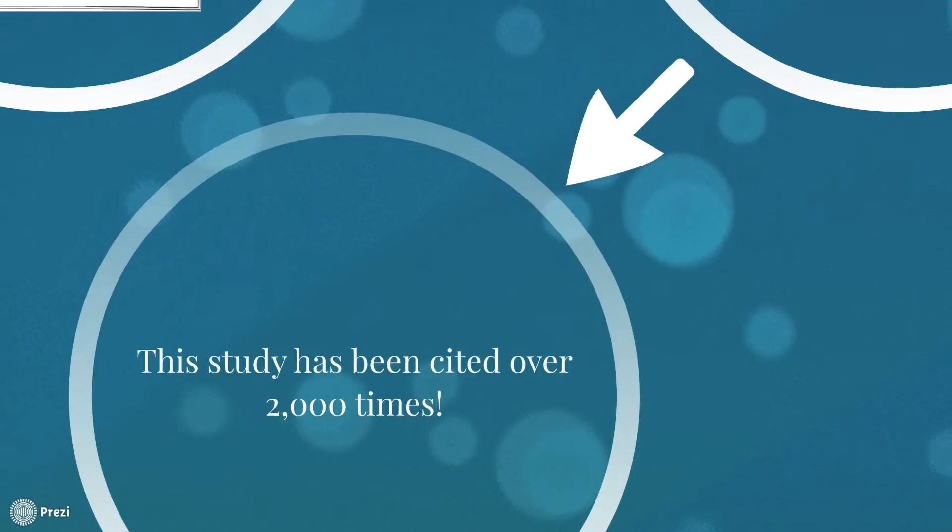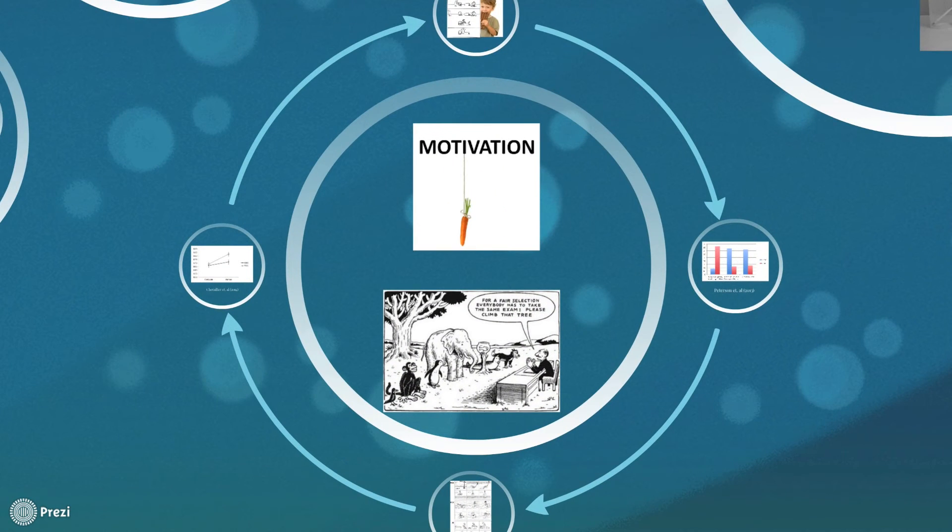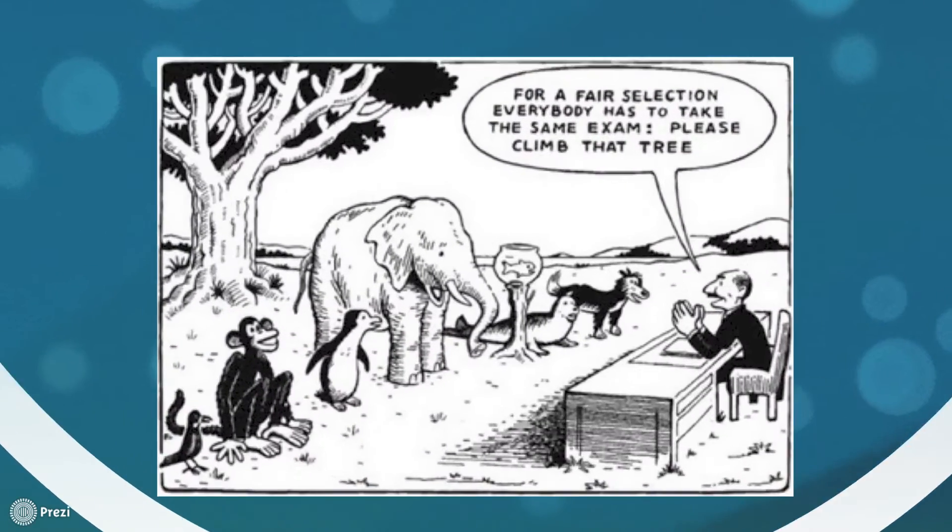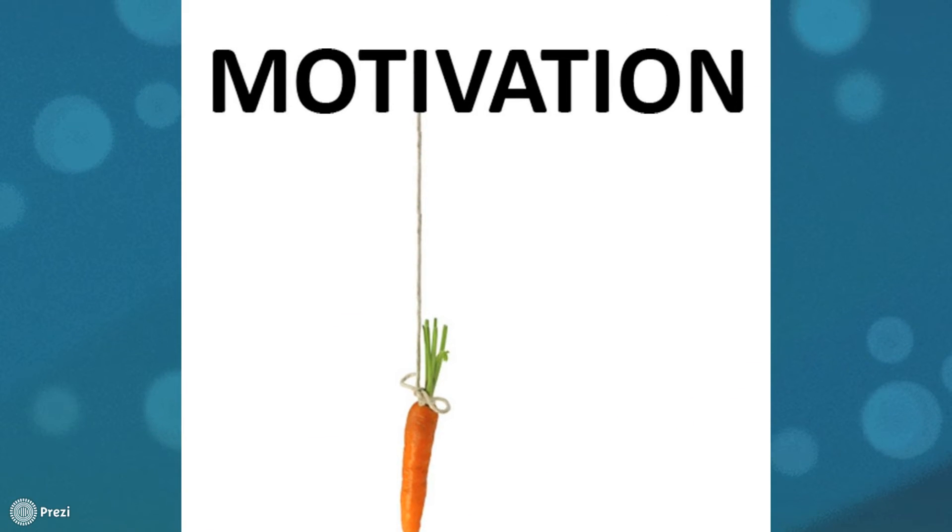Although these findings have been replicated a number of times, it is important to point out that there are a number of shortcomings to the traditional Sally Ann task, including it being motivationally barren. This could underestimate autistic individuals' theory of mind abilities. Additionally, most testing environments and apparatuses are laden with disadvantages towards people with autism, which scientists are now trying to eradicate. A simple change in the procedure to make it more motivationally rich resulted in dramatic improvement in autistic participants' performance.